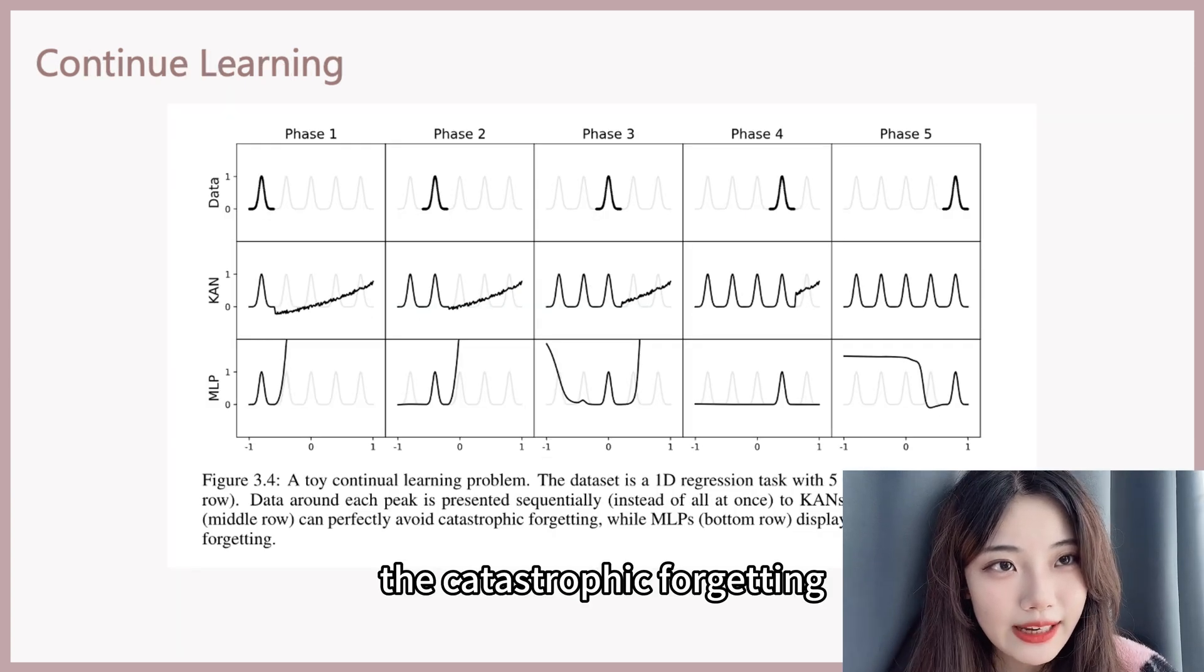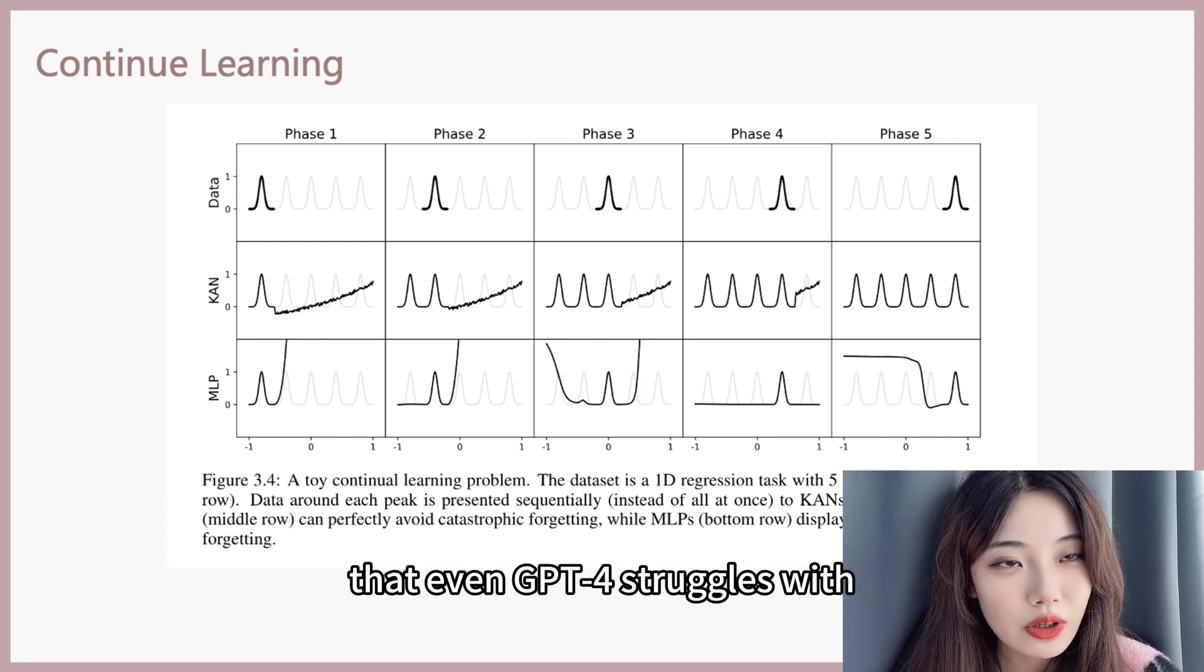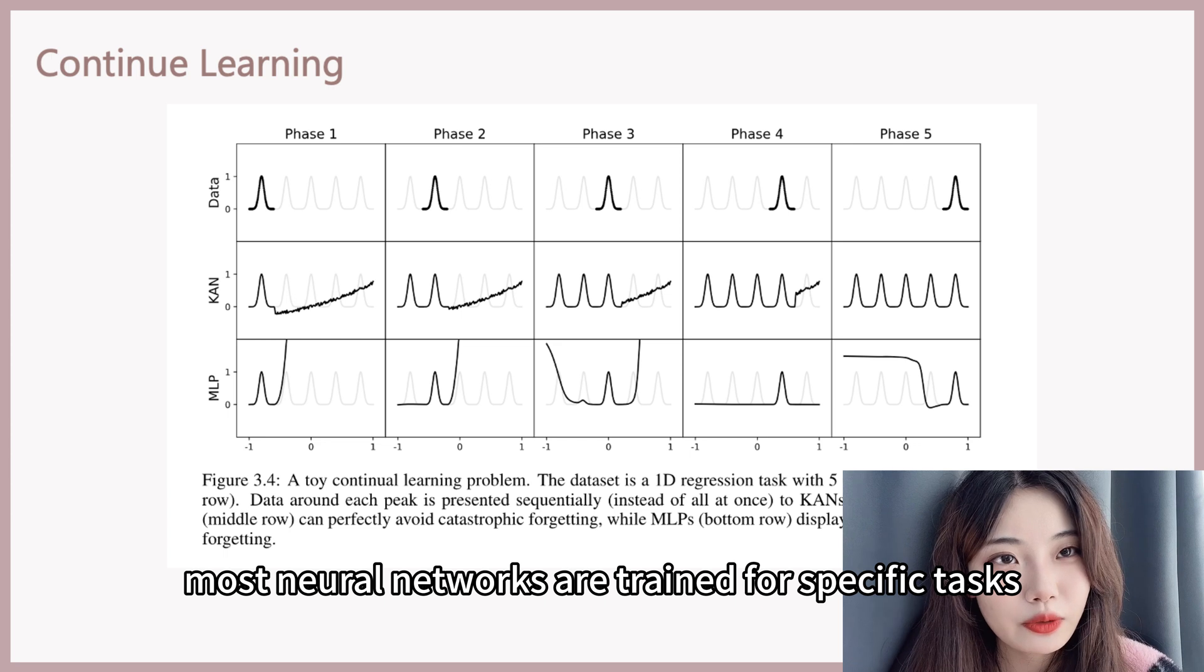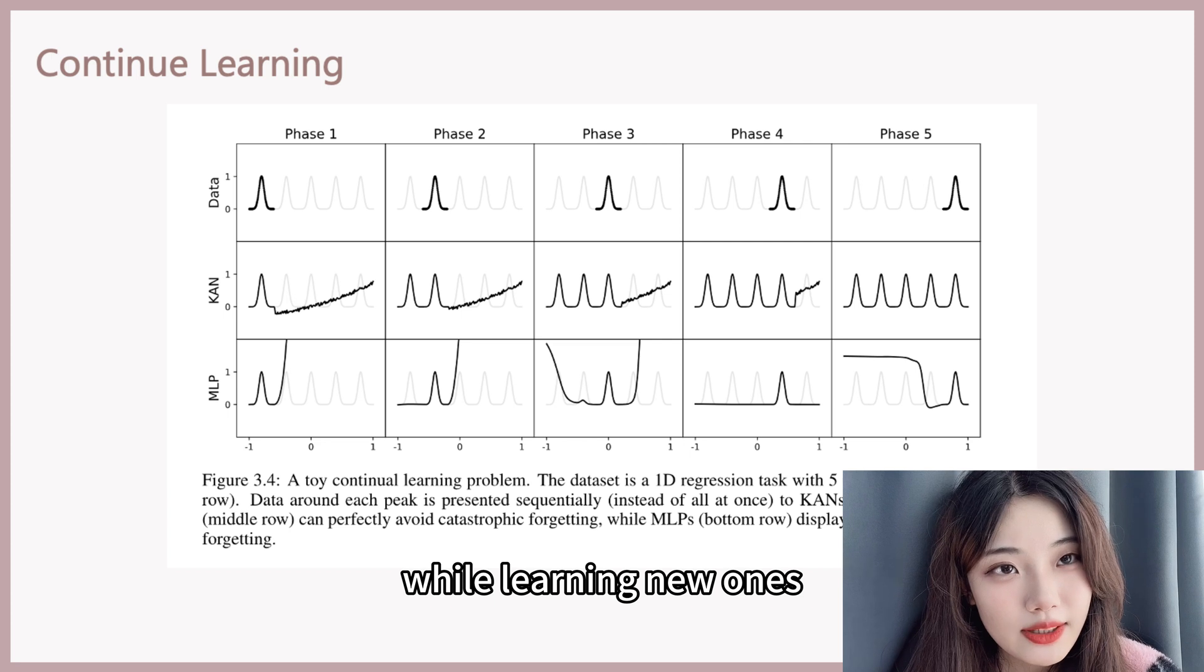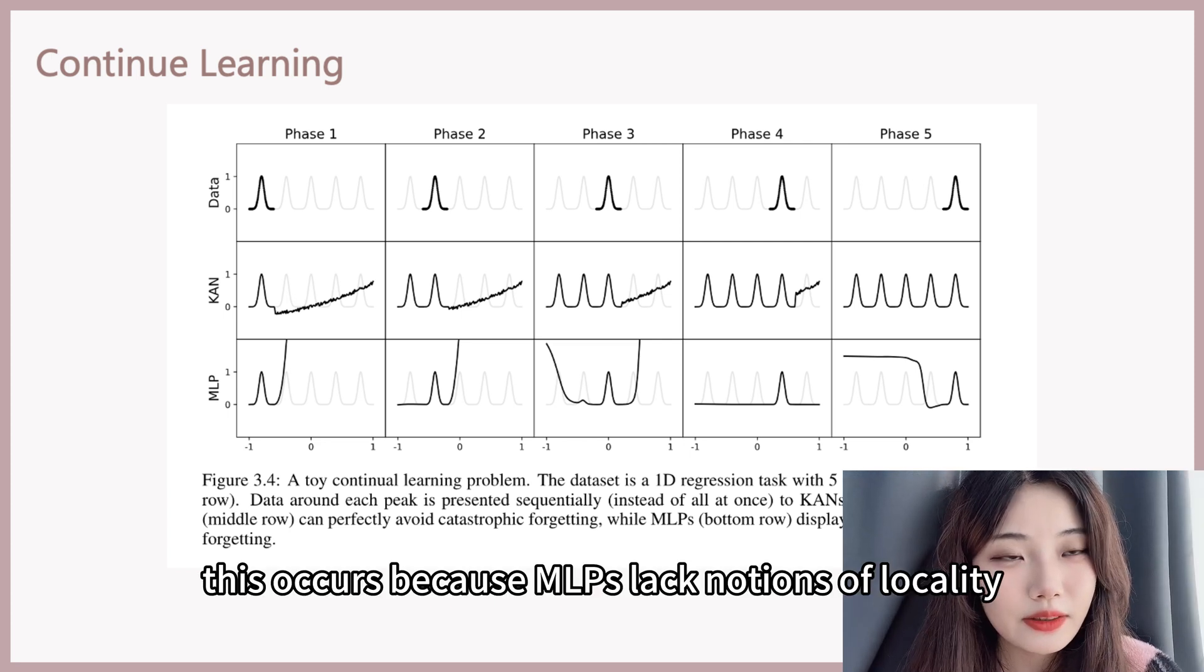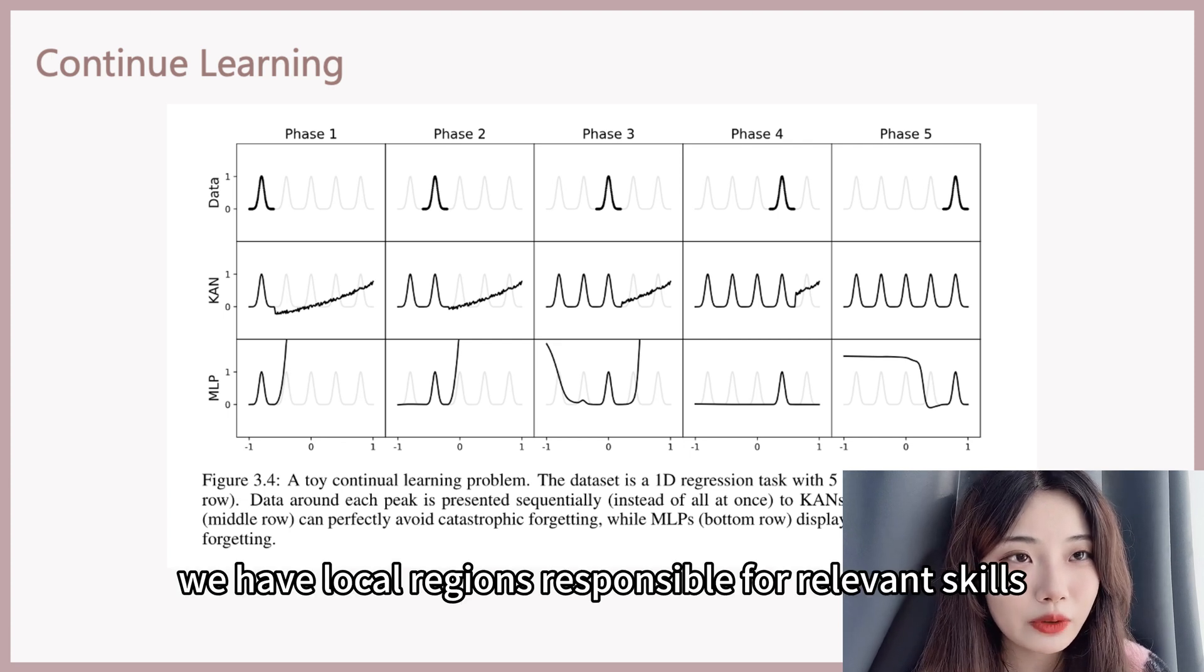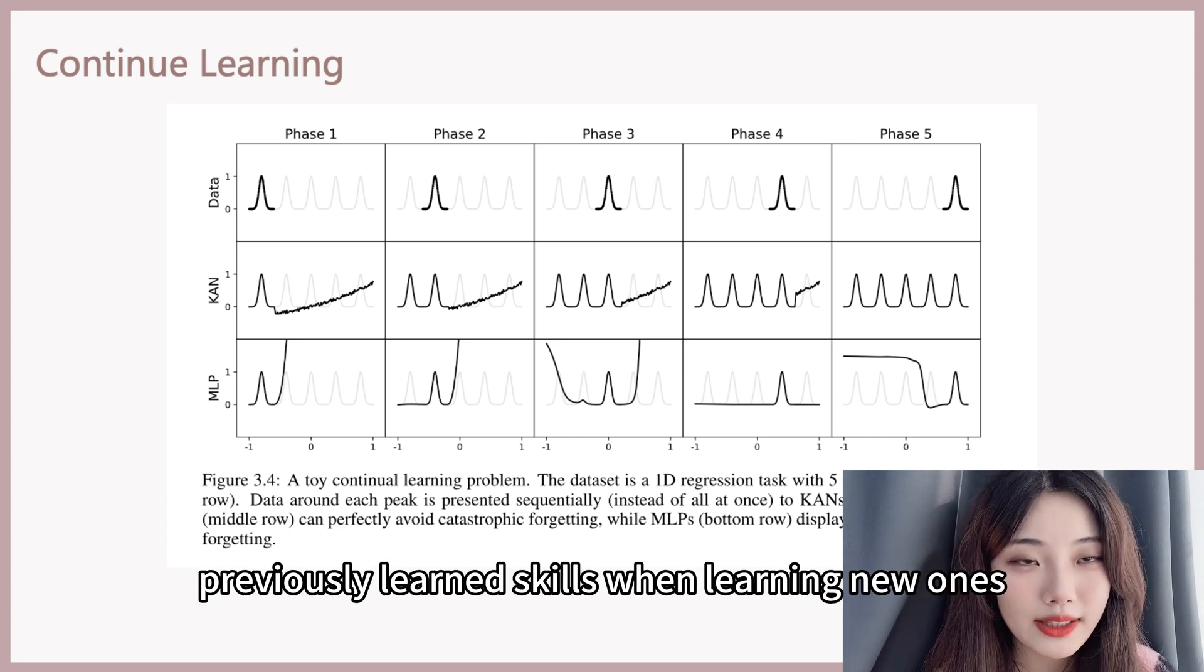The catastrophic forgetting is a challenge in AI systems that even GPT-4 struggles with. Currently, most neural networks are trained for specific tasks. They forget information from previous tasks while learning new ones. This occurs because MLPs lack notions of locality. Unlike human brains, we have local regions responsible for relevant skills. Humans don't override previously learned skills when learning new ones.